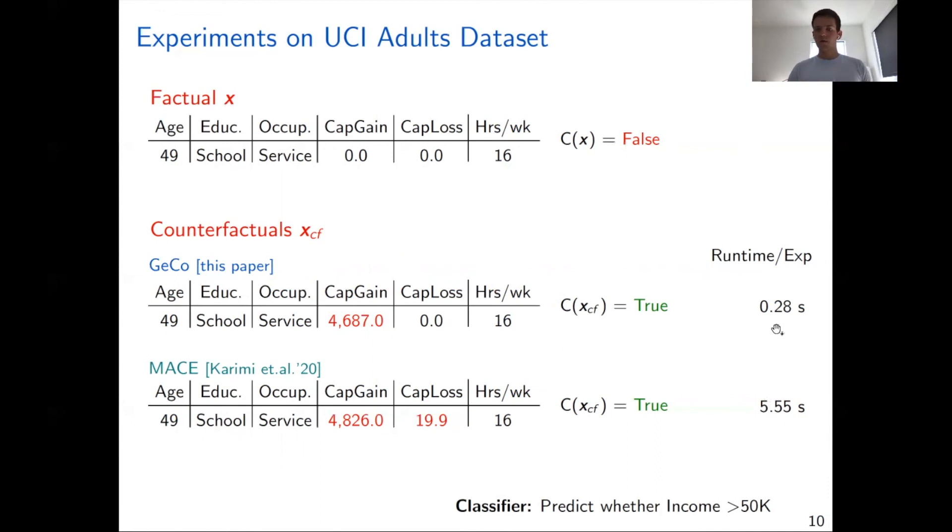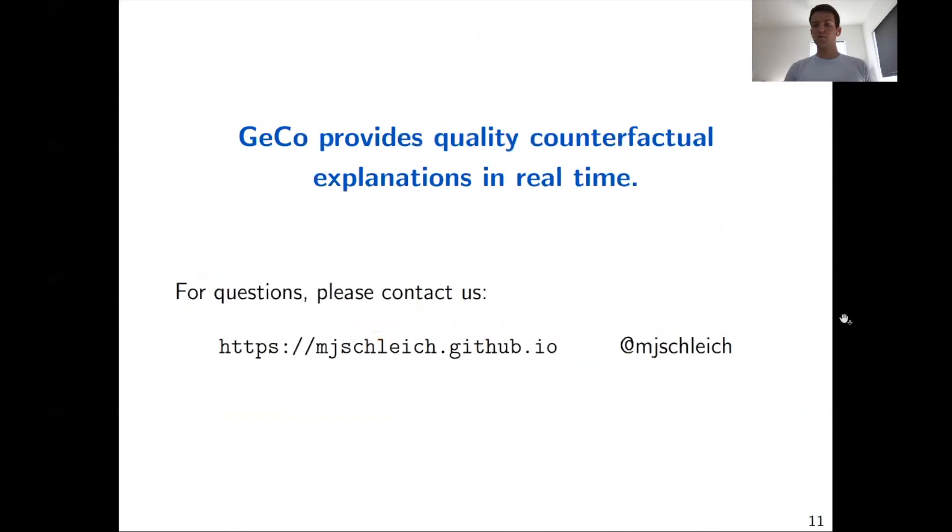If we were to consider more complex classifiers, this performance difference becomes even more exaggerated, and that's why we argue that Gecko can compute explanations in real time, but MAICE cannot really achieve the same performance. In the paper, we also present more experiments with other techniques that compute counterfactual explanations. But the key insight here was that Gecko is really the only tool that provides high quality counterfactual explanations such as MAICE, but also provides them in an efficient way. Other techniques are sometimes also efficient, but the quality of the explanations are usually not as good.